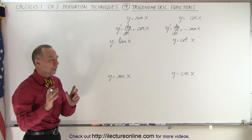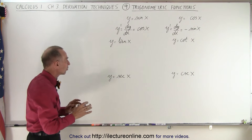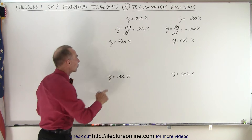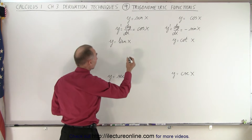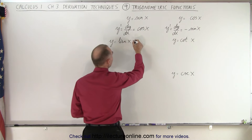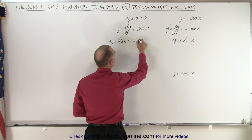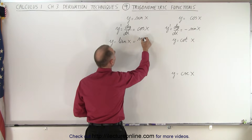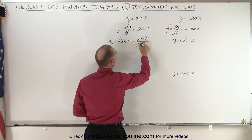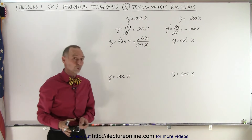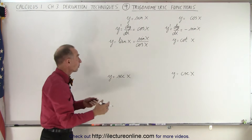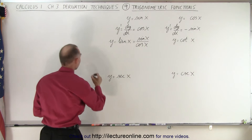Now we're going to use that information to find the derivative of the tangent of x, because we can write the tangent as being the sine of x divided by the cosine of x. And now we're going to use the quotient rule in order to find the derivative.